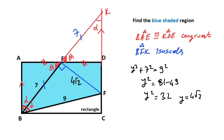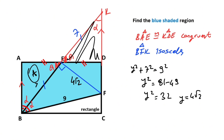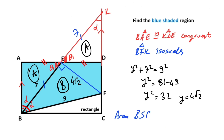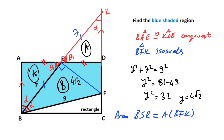The height here is 4 root 2. Next, I want to represent the area of this triangle with capital A, so this triangle's area must also equal capital A due to congruence. Let's call the other area capital B. If you notice, the area of the blue shaded region and the area of triangle BFK are equal. Therefore, the area of triangle BFK is 4 root 2 times base 14, divided by 2. So the value of the shaded region is 28 root 2 units squared.